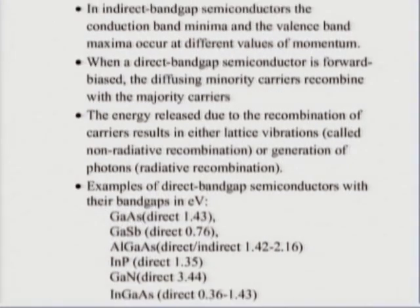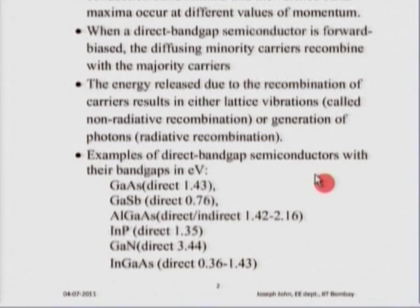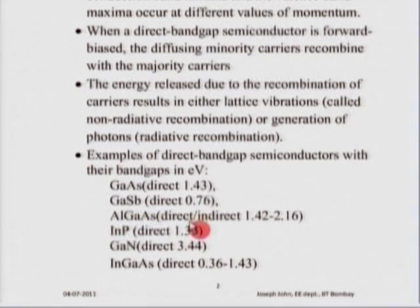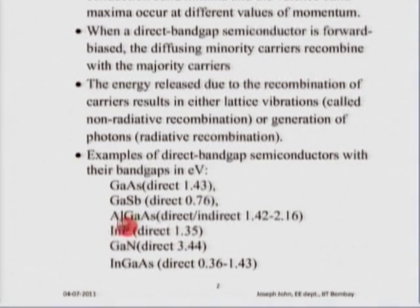This is the basic principle of an LED. Examples of direct bandgap semiconductors with their bandgaps in electron volts include: gallium arsenide, a binary compound with a direct bandgap of 1.43 eV; aluminum gallium arsenide, a ternary compound with both direct and indirect bandgap from 1.42 to 2.46 eV, which can be varied by changing the mole fraction of aluminum arsenide and gallium arsenide; indium phosphide; gallium nitride; indium gallium arsenide; and several others.